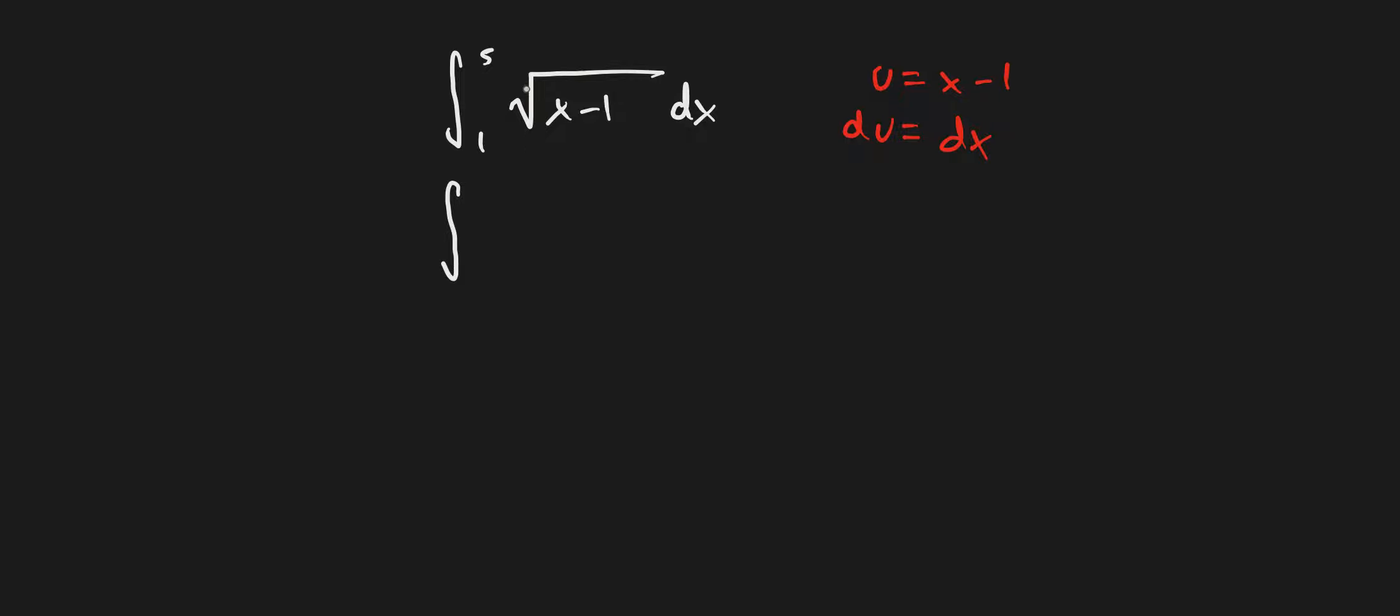So u equals x minus 1. Since 5 is x, 5 minus 1 is 4. 1 minus 1 is 0. And then this is √u du.